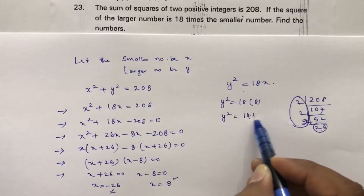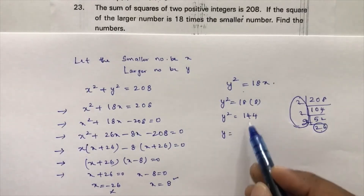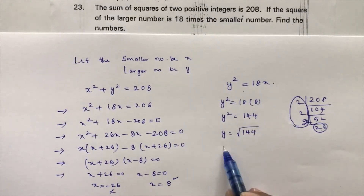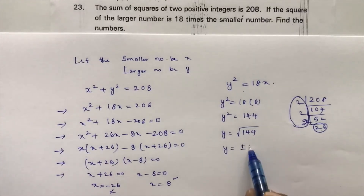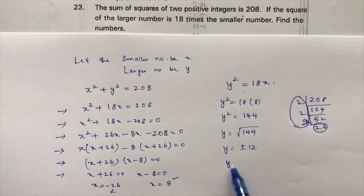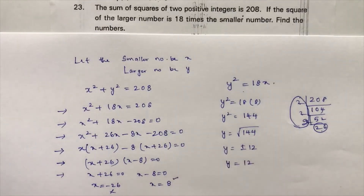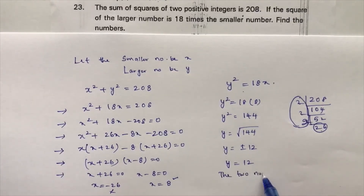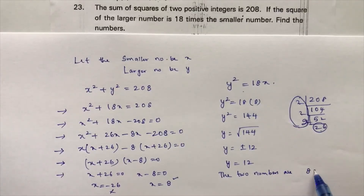Substituting x equals 8 into y squared equals 18x gives y squared equals 18 times 8 equals 144. Therefore y equals the square root of 144, which is plus or minus 12. Since we need positive integers, y equals 12. The two numbers are 8 and 12.